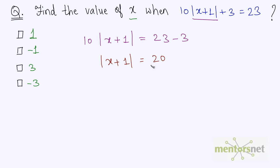So 10 times 2 is 20. Now we have a simplified expression which is x plus 1 taken mod of that is equal to 2.